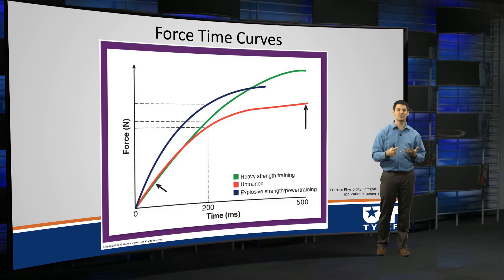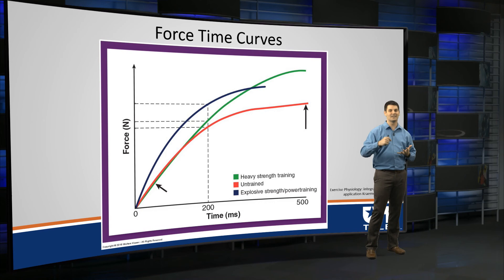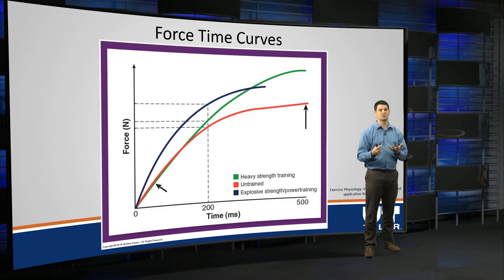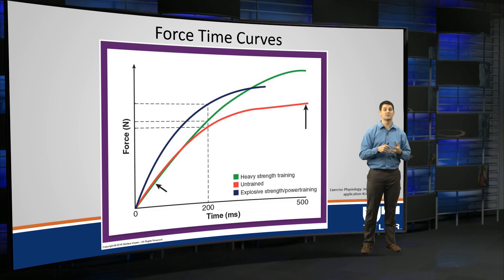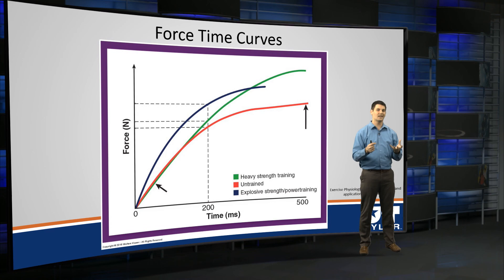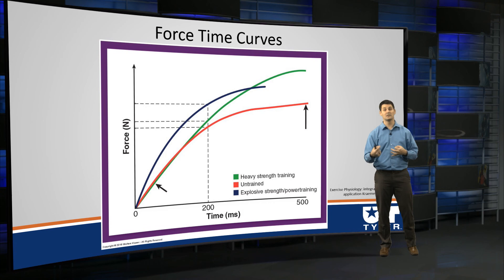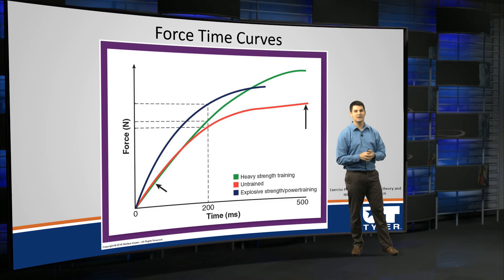You can see that force continues to increase in the green line and is greater than the red line. Power training — training rapid movements — shows that we're actually able to generate a lot of force a lot faster. However, our maximal force, while greater than untrained, is less than heavy strength training. Hopefully that gives you a good perspective of how actin and myosin molecules ultimately relate in the development of tension and how that relates to exercise physiology. In the next lecture, we'll get into more adaptations — what happens with prolonged endurance and strength training in skeletal muscle.